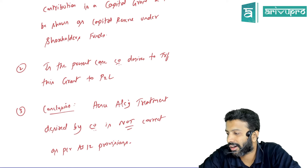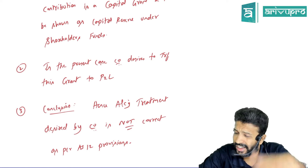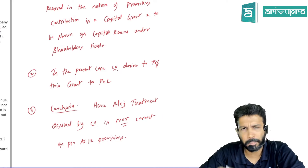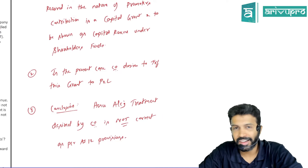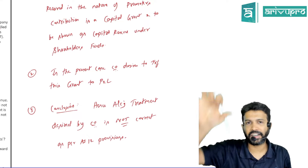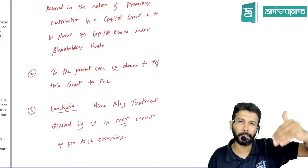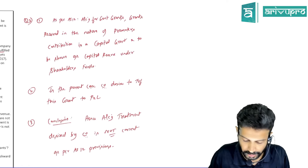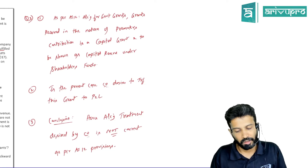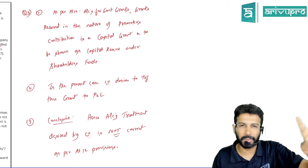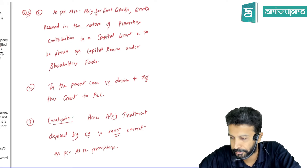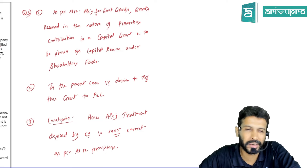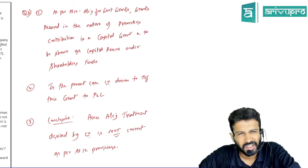You don't need to remember specific paragraph numbers of the standard. Just remember the standard name, number, and the key provisions — that is sufficient. Para numbers are difficult to remember. Write the main provisions, and if you remember para numbers like AS 11's para 46A exemption, that's a bonus. Generally, just remembering the standard name and keyword of the provision is enough.